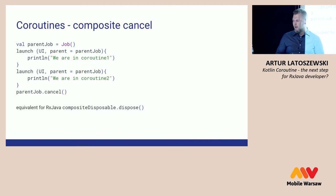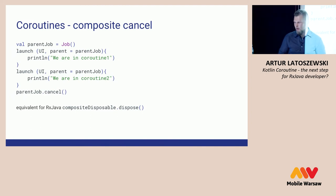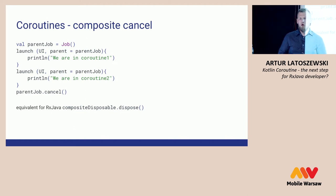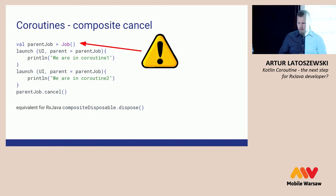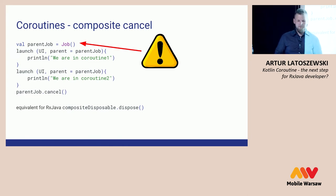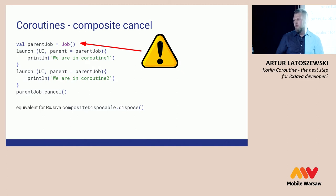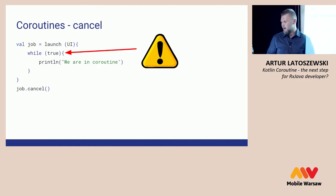When we have more coroutines and we want to cancel them all, we simply create a parent Job and pass this parent Job to all the coroutines we want to cancel. This parent Job will work as the equivalent of CompositeDisposable. What is important here: when we cancel a Job, we can't pass it to any new coroutine. We have to create a new Job object.